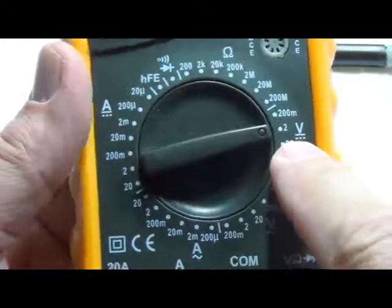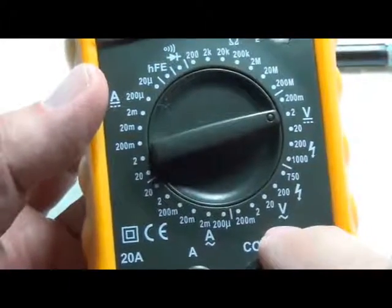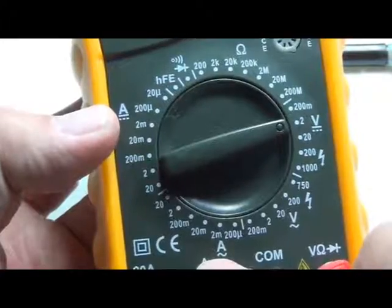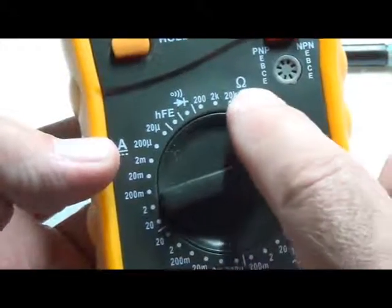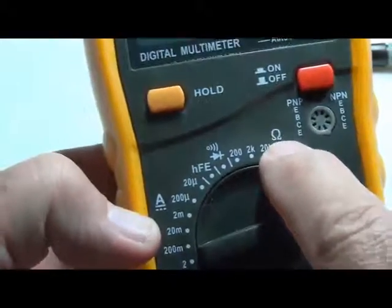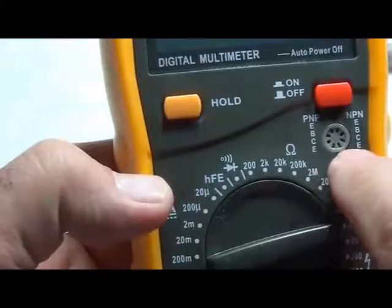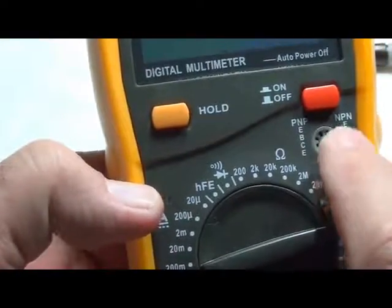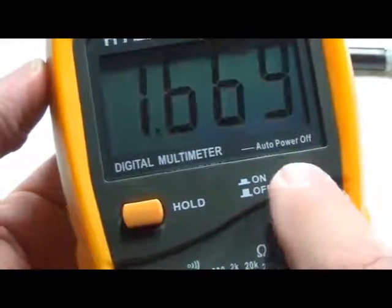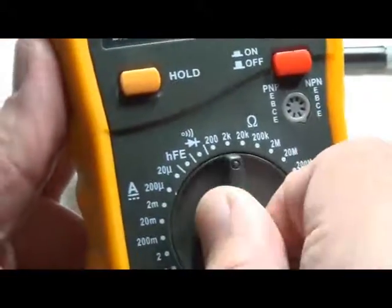You can see that it does DC voltage, AC voltage, it's got currents, it's got resistance. You can test diodes. You can also test transistors here. One of the really nice features is it's got a really nice on-off button versus having to set it at a certain place on the dial.